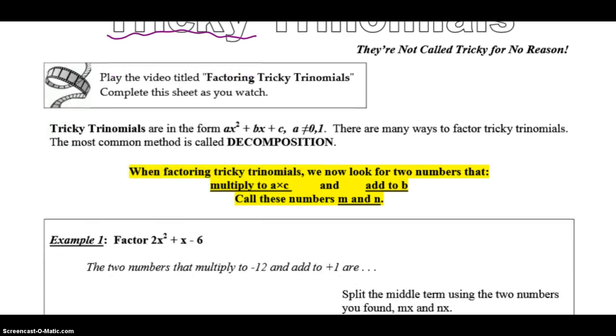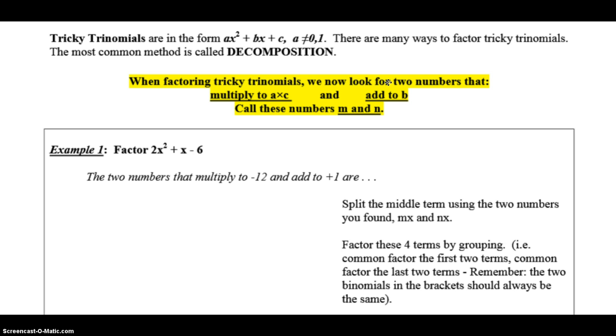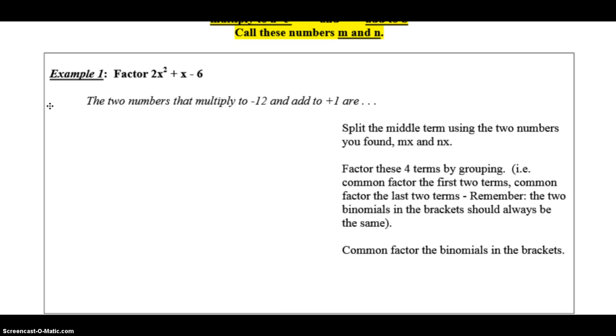So, let's work through our first examples here. When factoring tricky trinomials, we now need to look for two numbers that multiply to the number in front of your x squared and your constant. They have to multiply to the product of that, and they have to add to the middle term. So, these are going to be your M&Ms, same as what we did last time, or I shouldn't say same, but similar to what we did last time. So, for the first one, this is our tricky trinomial. We have three terms, our x squared, our x, our constant. The number in front is a 2. I'm unable to just common factor out the 2. So, it's not going to be simple, no common factoring. We have to go for this tricky method. So, what we need to do is take the first number and the last number and multiply them together. That's negative 12. So, what I need is two numbers that multiply to negative 12.